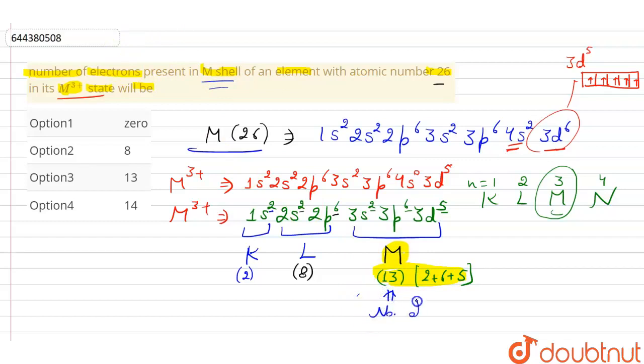So option 1, 0 is wrong. Option 2, 8 is wrong. Option 3, 13 is the right option. Option 4 is wrong. So option 3, 13 is our answer. Thank you.